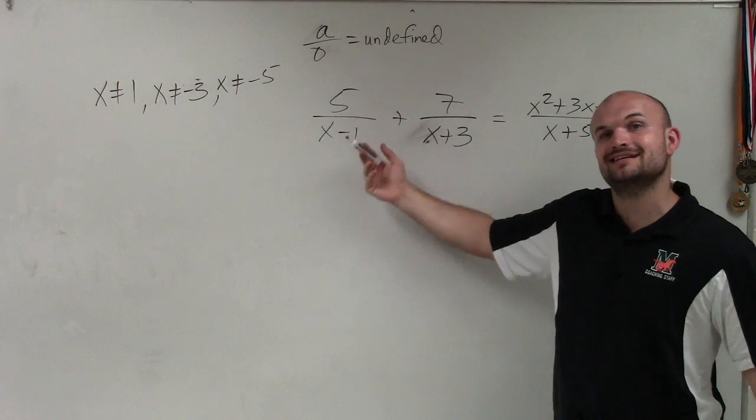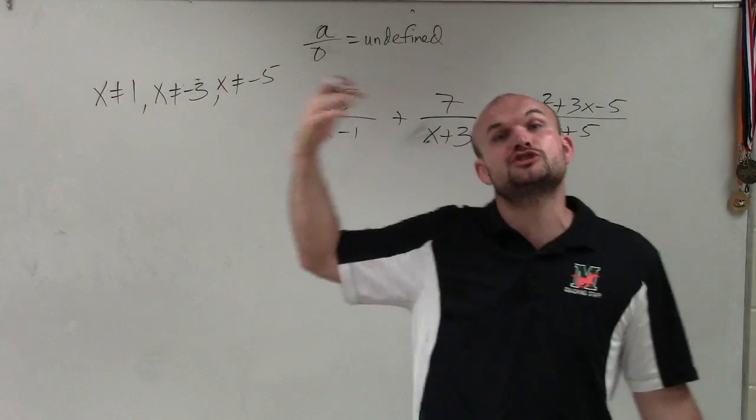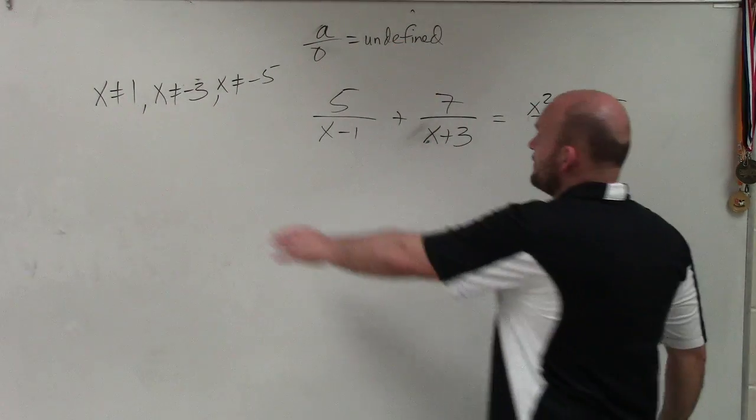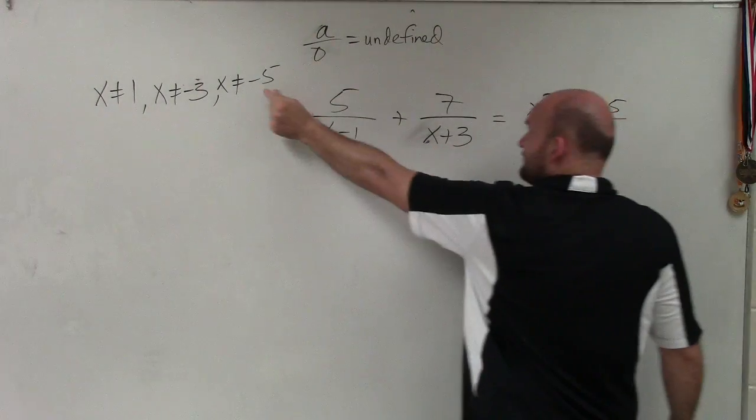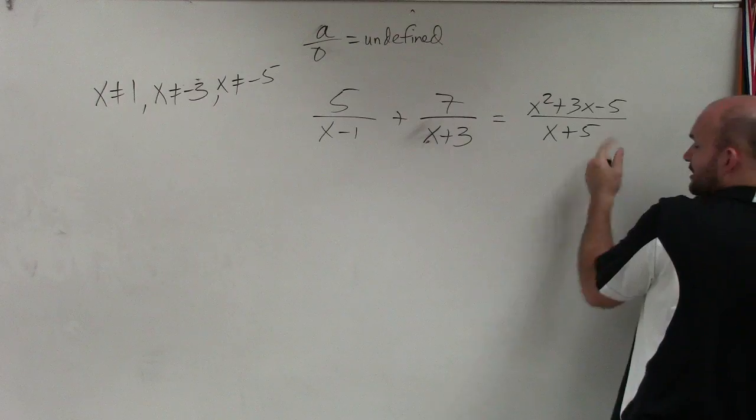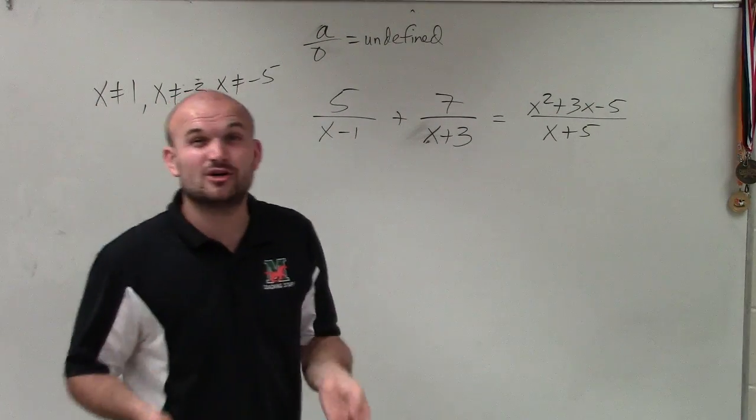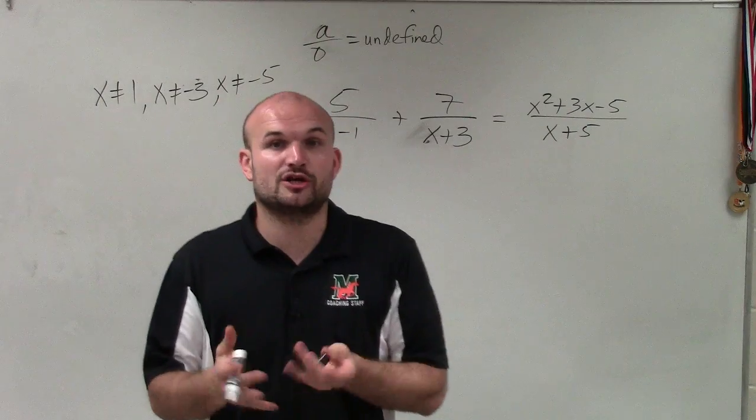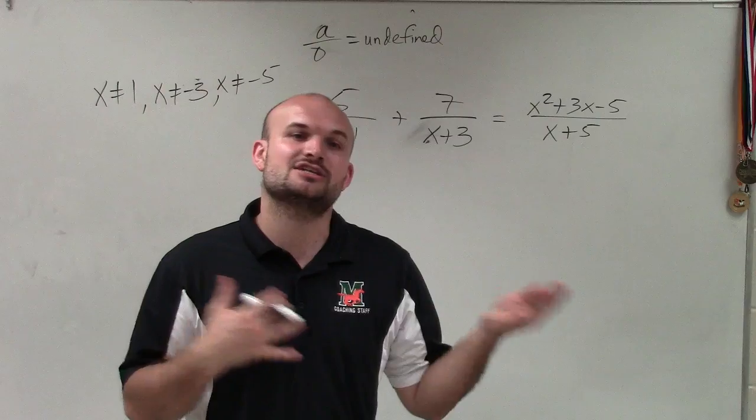Therefore, that is going to produce an undefined value, which we call an extraneous solution. If I plug negative 3 in for x, you can see here it's going to create 0. And if I plug negative 5 in for x, over here it creates 0. So anytime we have a value that can create 0 in our solution, it is either going to create an asymptote or a hole, and the solution is going to be extraneous.